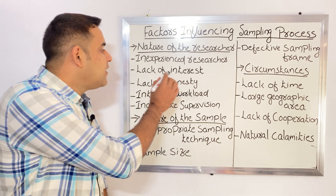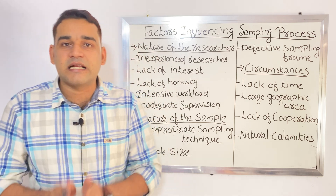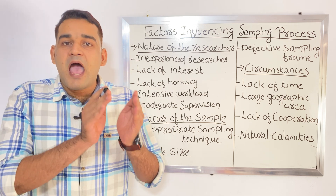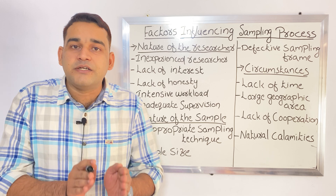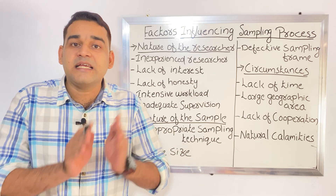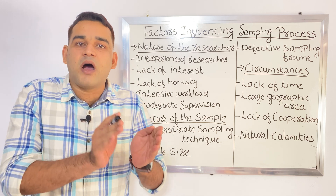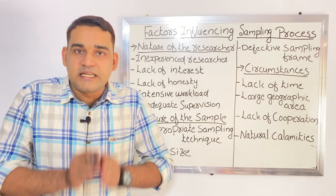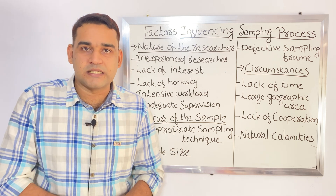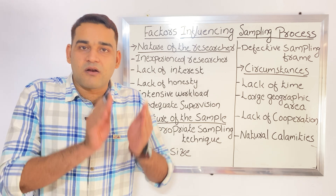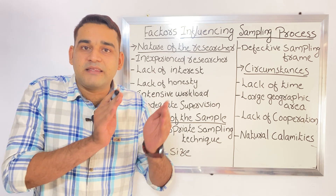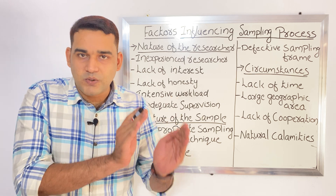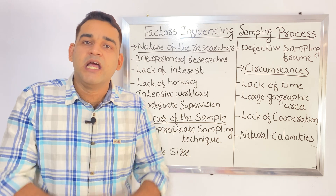Next one is lack of honesty. The next important thing in research is you have to do it honestly, because you are trying to find an answer to a question or trying to solve a problem. If you are not following honesty, it is going to affect the sampling process. The result will be wrong and your selection will be wrong because you are doing fake things. Always keep it in mind: you have to do your study honestly.